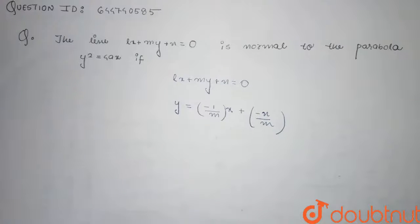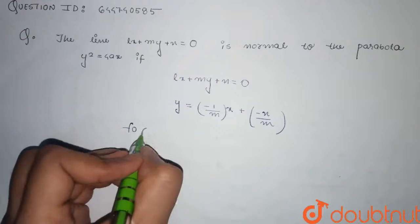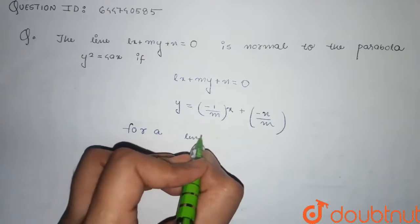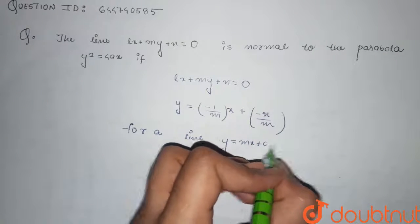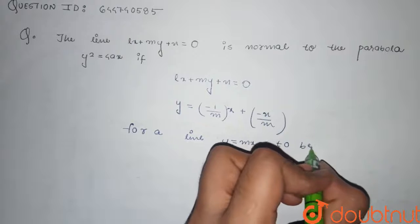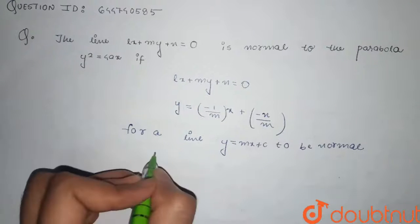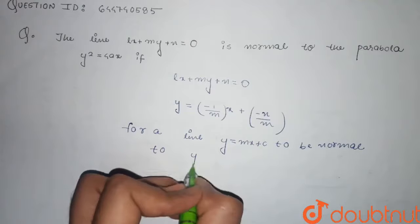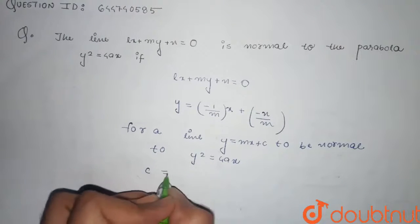This is the standard form of y = mx + c. Now for a line y = mx + c to be normal to parabola y² = 4ax, it must satisfy the condition of c = -2am - am³.